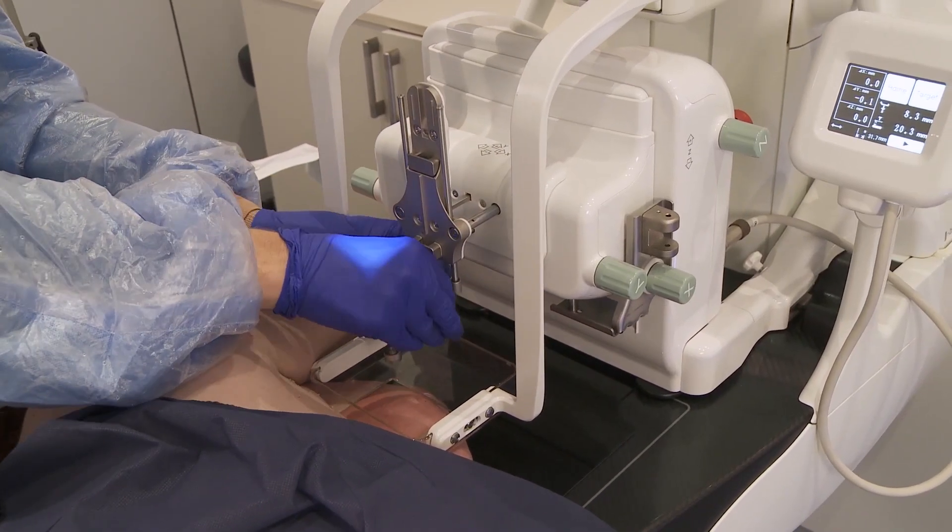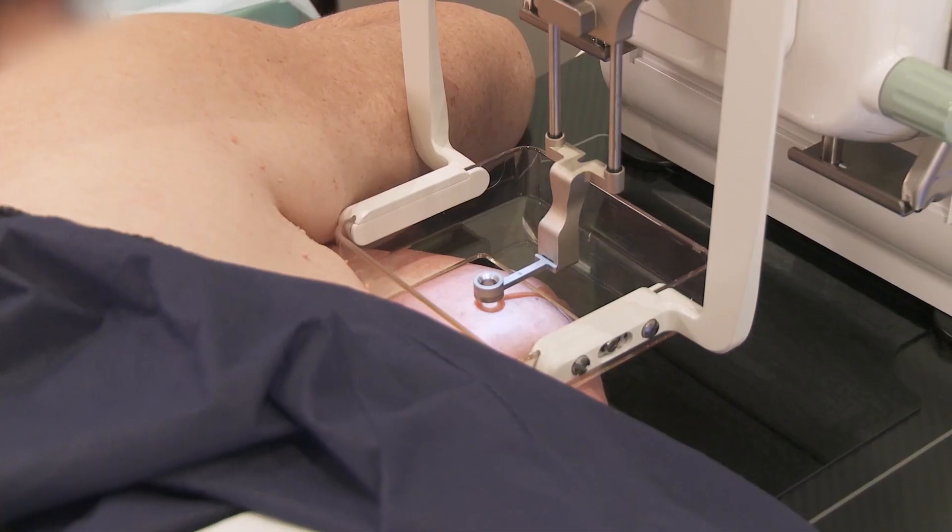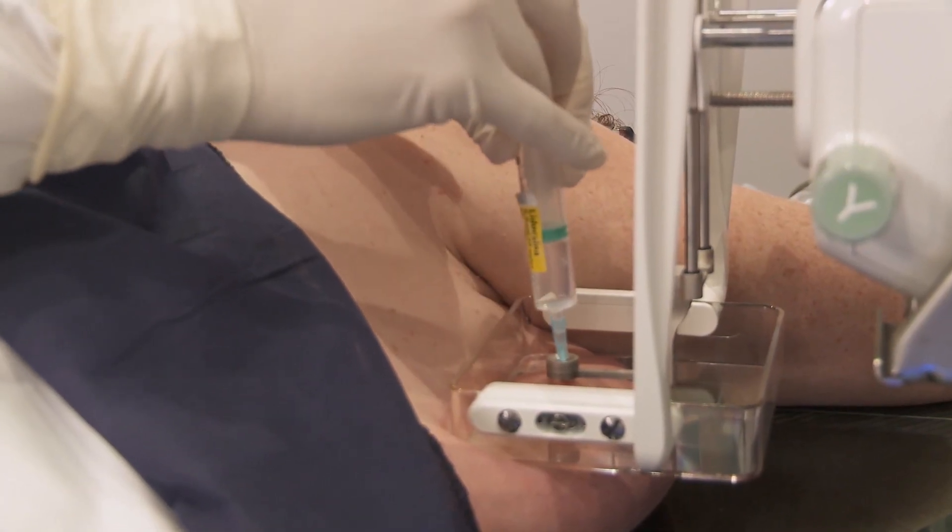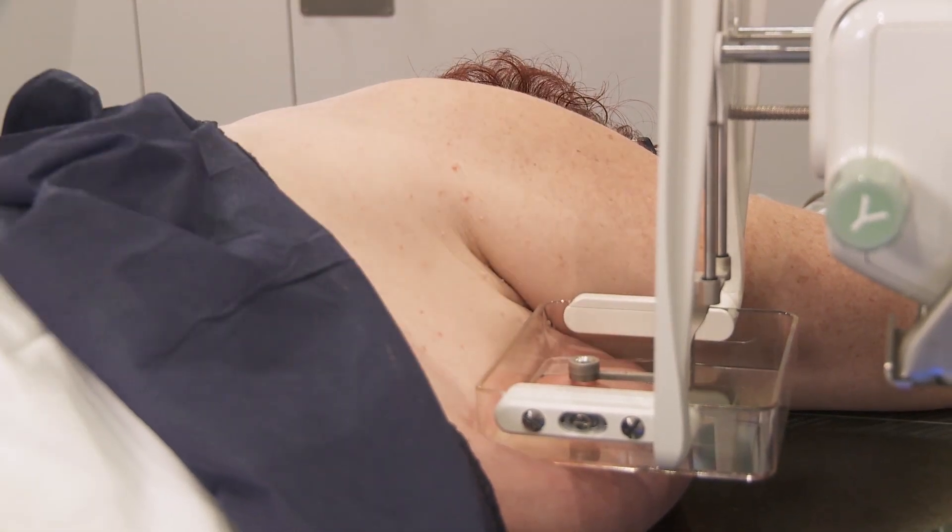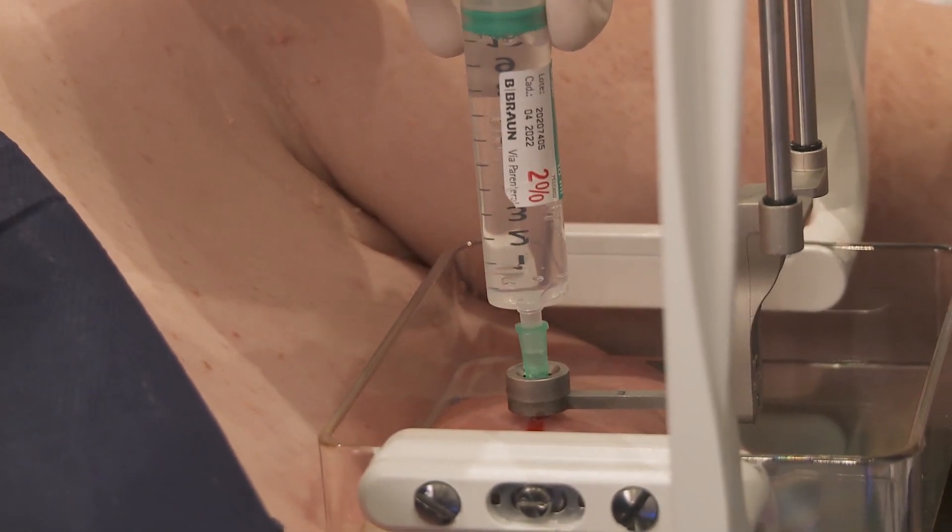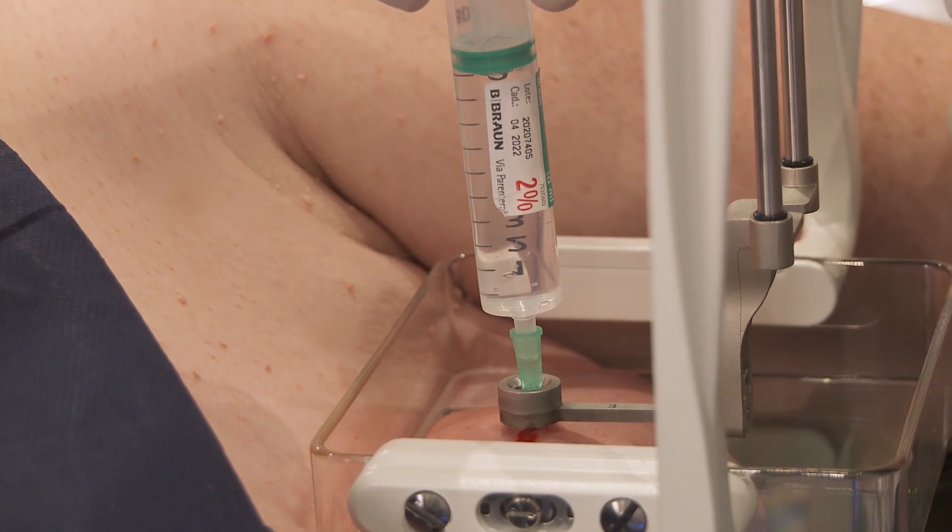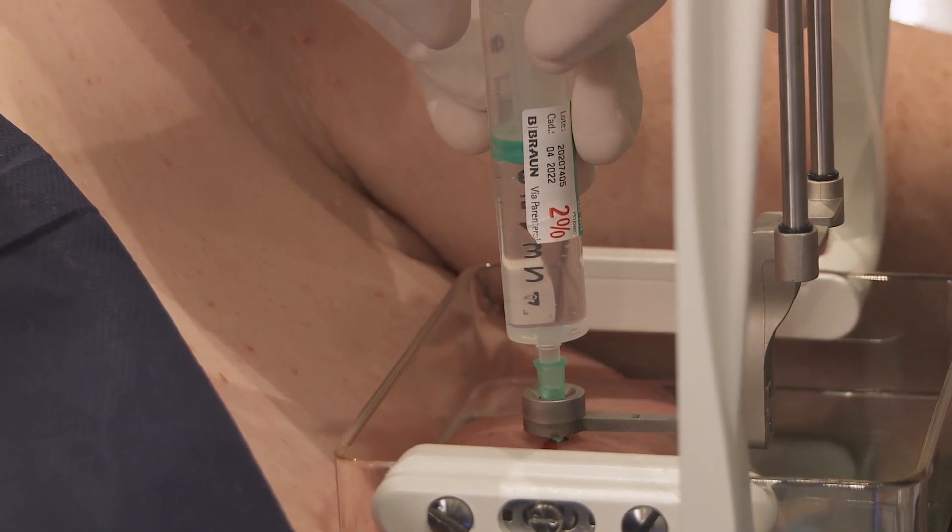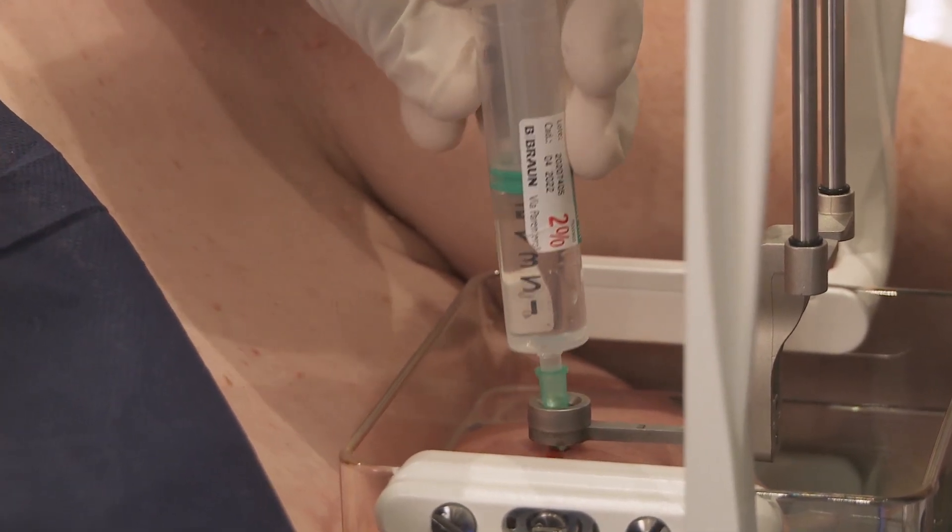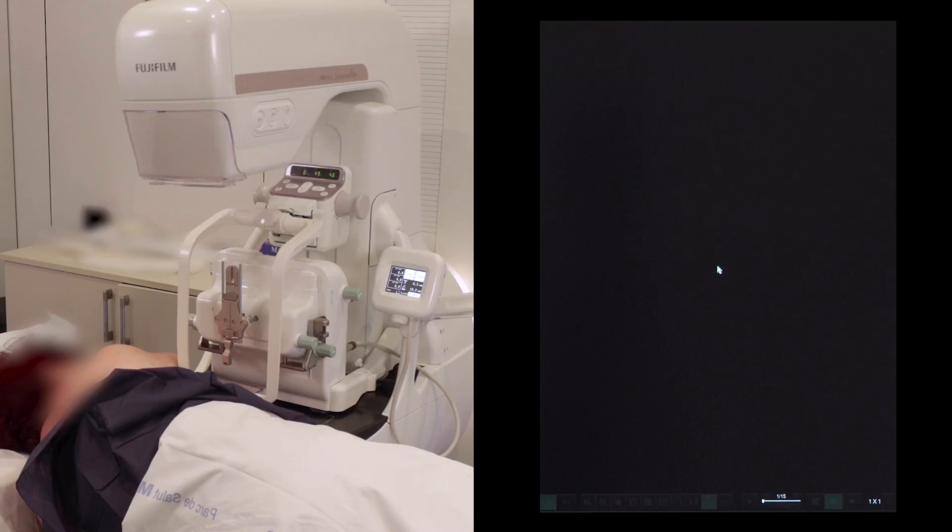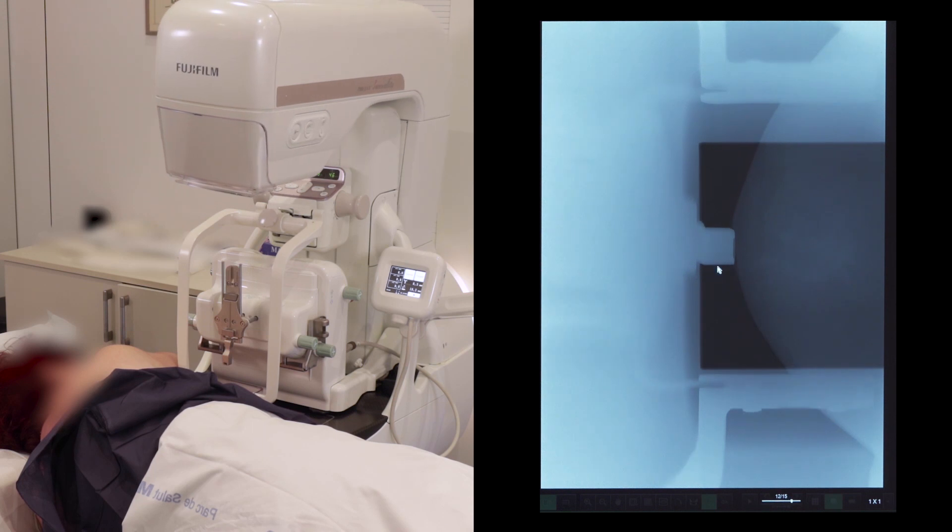Insert the Fuji needle guide holder and lower it down. Inject surface anesthesia to be followed by depth anesthesia. Press OK to confirm. Acquire a TOMO biopsy sequence for retargeting, since the target might have shifted. A new target is added due to the injection of anesthetic.